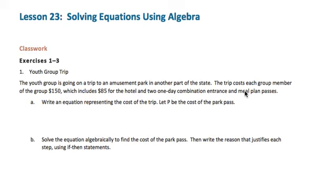In Part A, we're going to write an equation representing the cost of the trip, and we're going to let P be the cost of the park pass. Our equation then is $85 plus 2 times P, where P is the cost of the park pass.